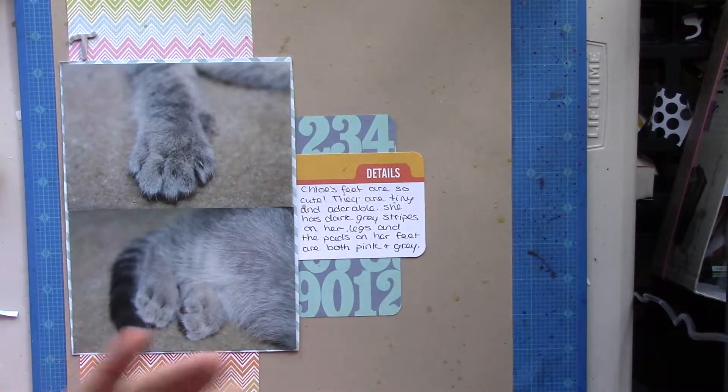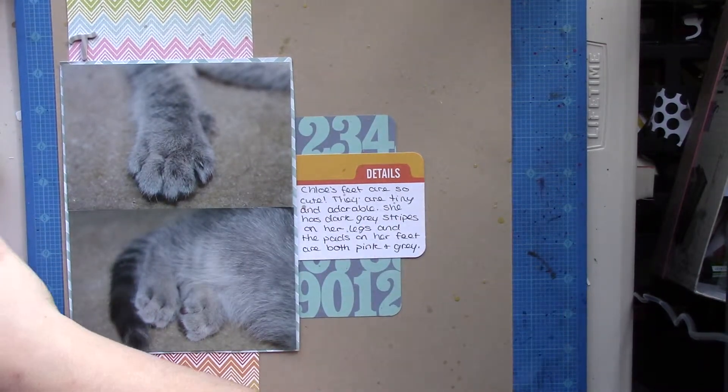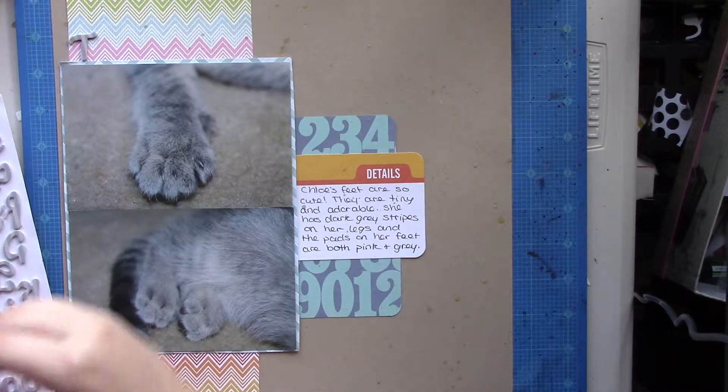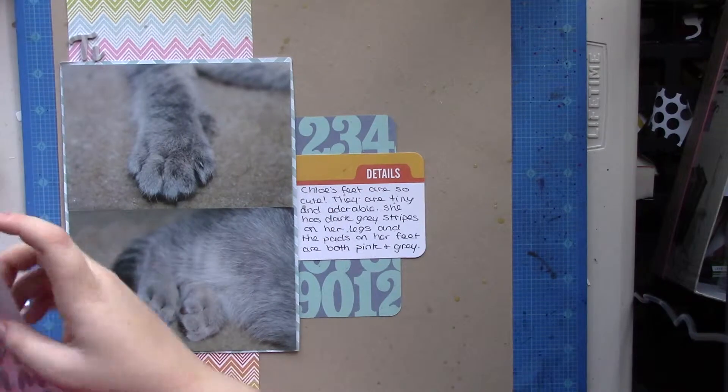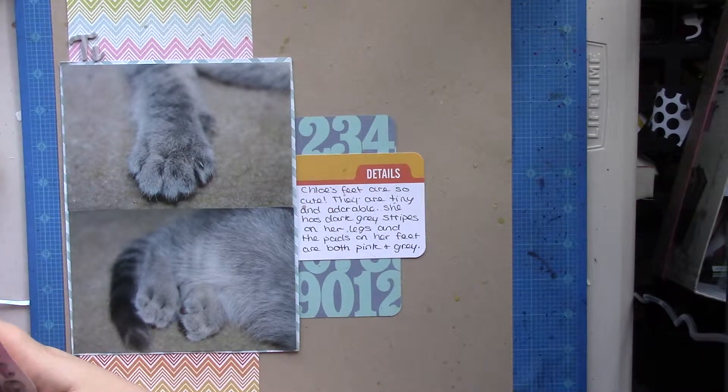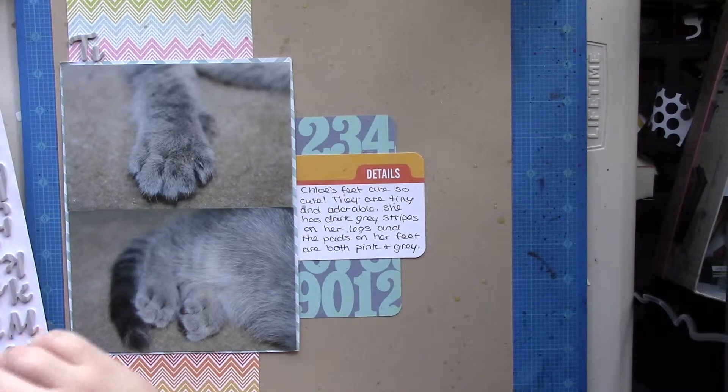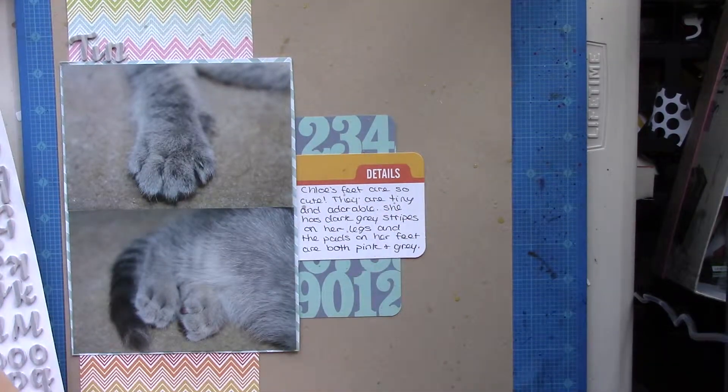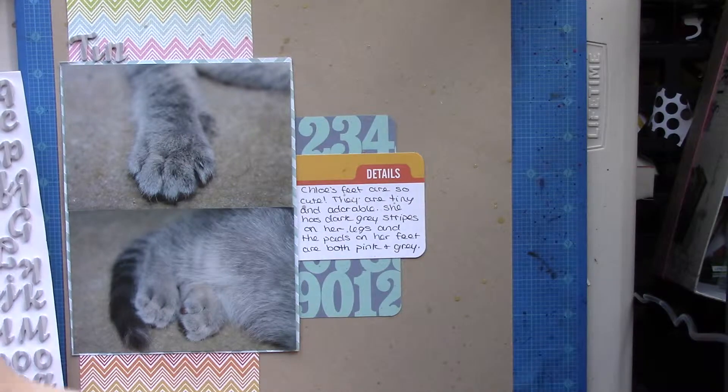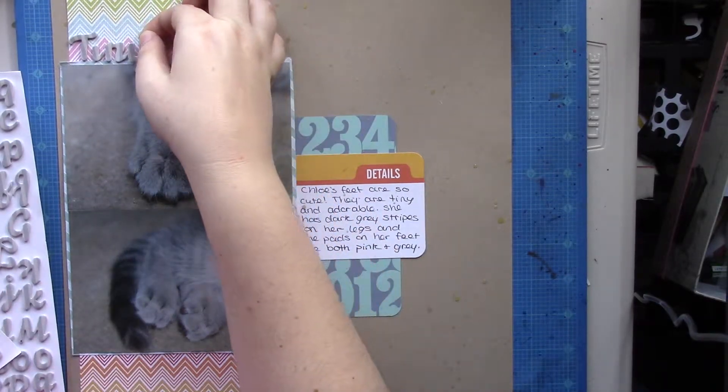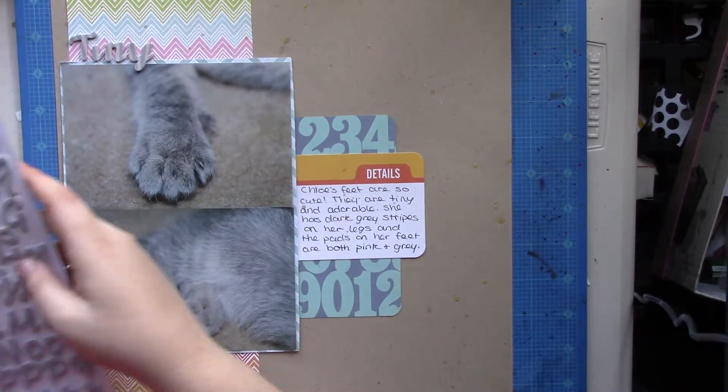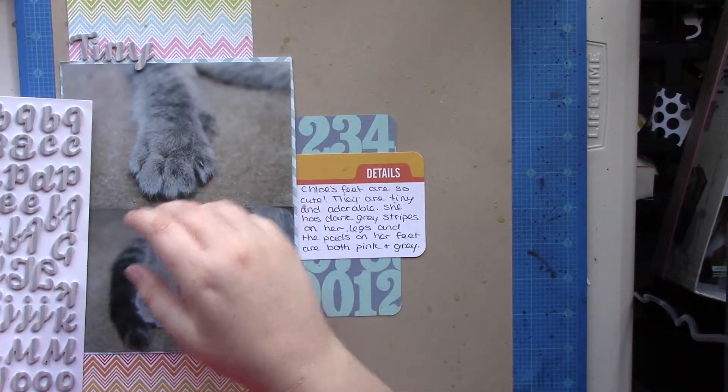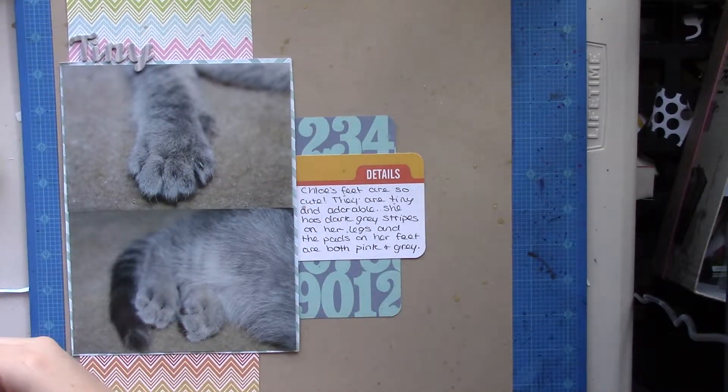But I thought as her, oops, I just smudged them in there. I thought as she is light gray and dark gray, it might go all right, I guess. I don't know. Yeah, I think I'll call this layout Tiny Feet. I like the font of these stickers, I just don't like that they're striped. And it's not my favorite pattern, but that's okay.